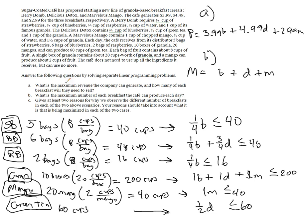So in A, the maximum revenue is desired. The revenues are listed as $3.99 for each berry bomb, $4.99 for each delicious detox, and $2.99 for each marvelous mango. So B, D, and M are the number of each of those respectively.